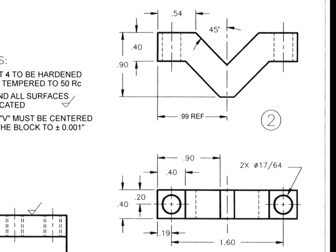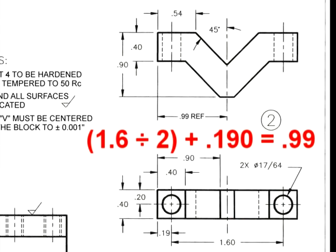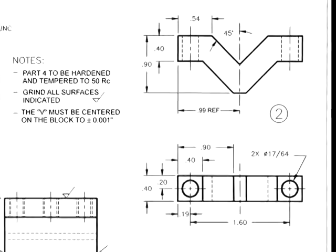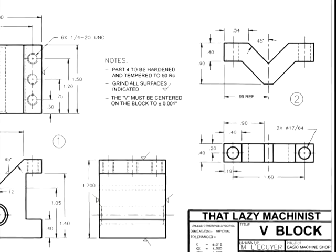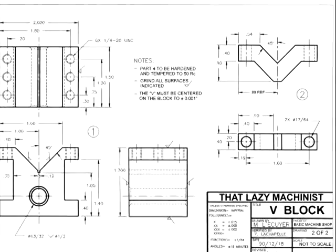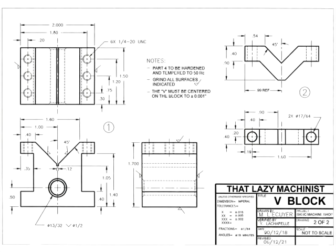The 990 thousandths dimension is a reference because it can be found two ways: directly as 990 thou, or by taking half the 1 inch 600 thousandths dimension and adding the 190 thousandths dimension between the center of the hole and the end of the part — yielding the same 990 thou. Since I can find it two ways with the same fundamental dimension but different tolerances, one must be marked as reference. Because the 1 inch 600 thou is crucial for hole spacing, the 990 thou is marked reference only.